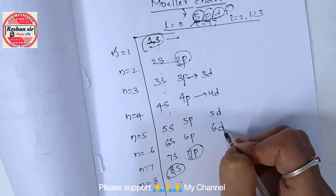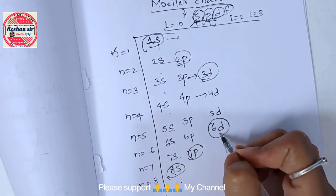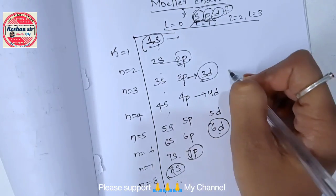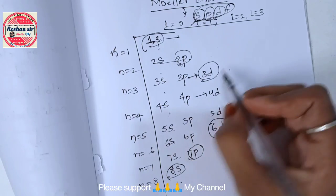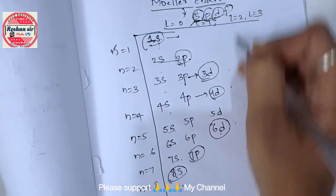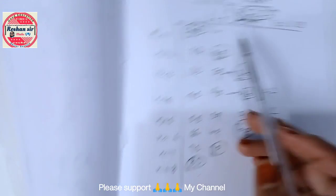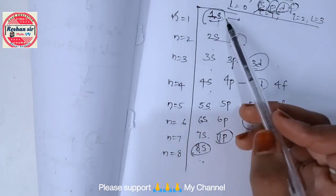Now again leave this 3d as well as 6d, which means you should not write 3 and 6 again. So here write 4f, 4f, 5f. This is the Moller chart.